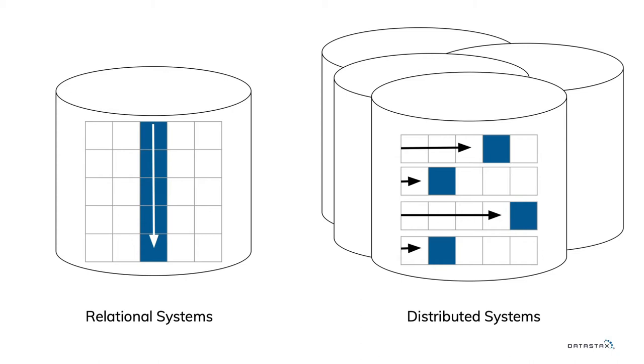For distributed systems — speaking directly about Cassandra — data is arranged in more of a row-based access. Those columns could exist in different data files and different positions in those data files, making it a much harder problem. It's not a single pass on disk or a simple index. If you're looking for 'country' as a field, it could be in a lot of places. You get into a scatter-gather problem that's almost impossible to make efficient, and you have many more servers in the cluster.